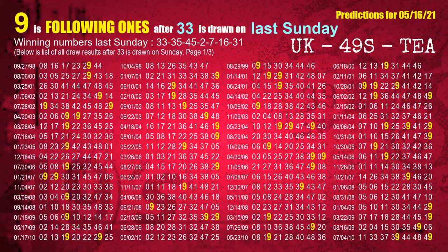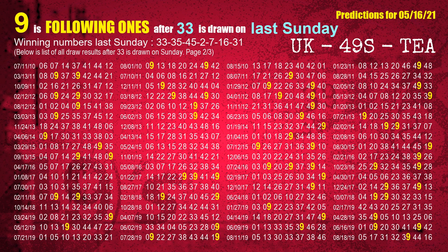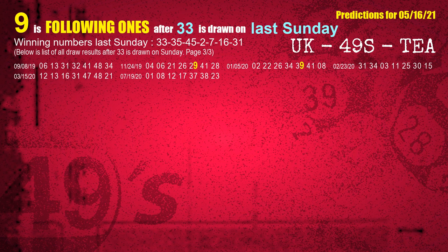After calculating following ones with today's result, we will find out following ones through the result of same day last week. The first winning number last Sunday is 33. We list all draw results which are one week after a Sunday draw with 33 as a winning number. The most frequently following units digit is 9 when 33 is the winning number on last Sunday. We highlight the units digit 9 in yellow.